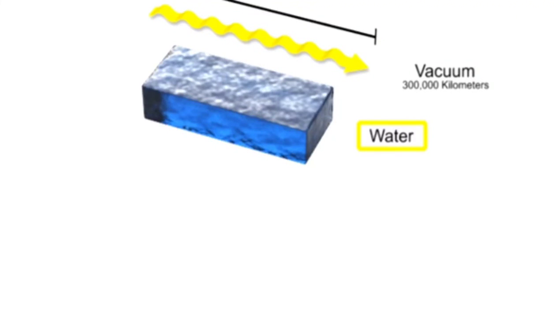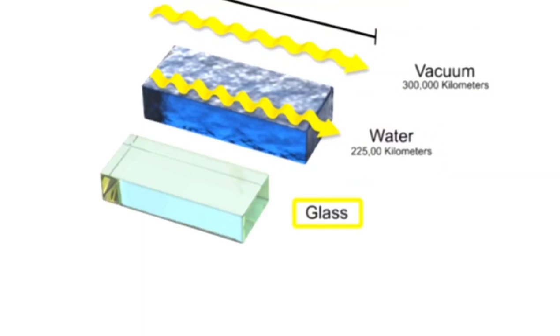In water, light travels at about 75% of its speed in a vacuum, or 225,000 km per second. In glass, light travels at 67% of its speed in a vacuum, so the light speed is 300,000 times 0.67, or about 200,000 km per second.